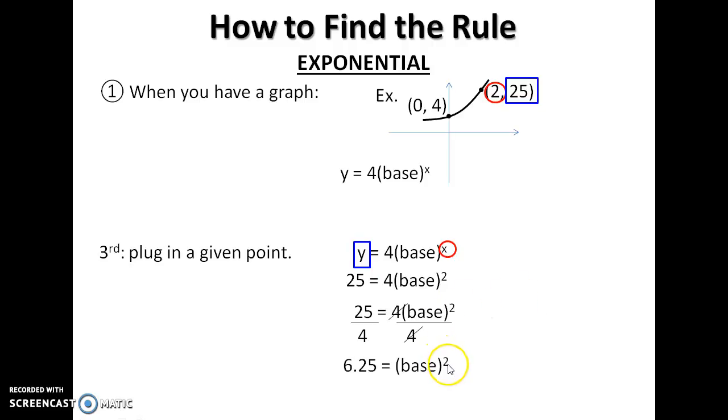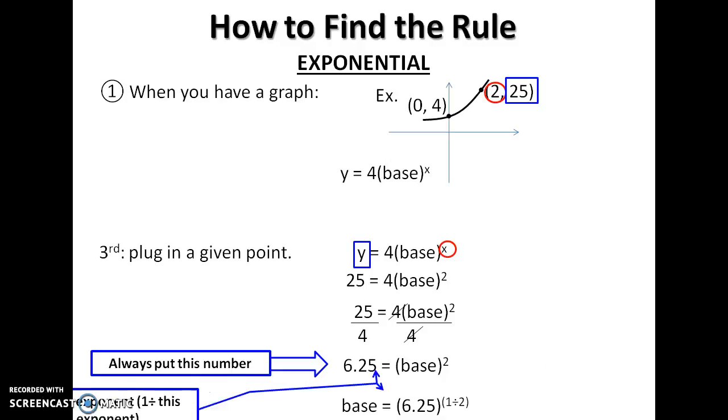And now to undo this, you can either do the square root or, more generally, you always take this number to the exponent of 1 over this number. So 1 half means the same thing as square root.